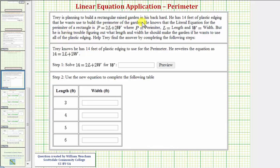Trey is planning to build a rectangular raised garden in his backyard. He has 14 feet of plastic edging that he wants to use to build the perimeter of the garden. He knows that the literal equation for the perimeter of a rectangle is P equals 2L plus 2W, where P equals the perimeter, L equals the length, and W equals the width.